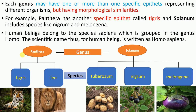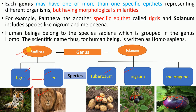Panthera has two species: tigris and leo. Solanum has three species: tuberosum, nigrum, and melongena — because they share a common characteristic of their fruit shape. That is why they all fall under one genus: Solanum. Similarly, lion and tiger have some fundamental similarities, which is why we cannot put them in the same species, but we can place them in the same genus. So species is separate for both animals.